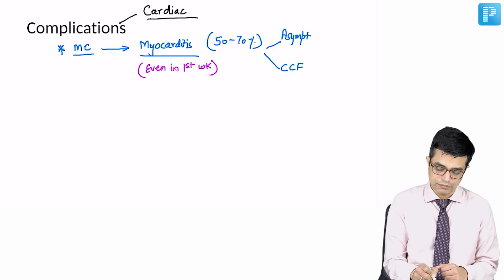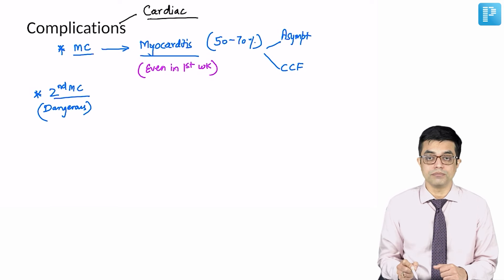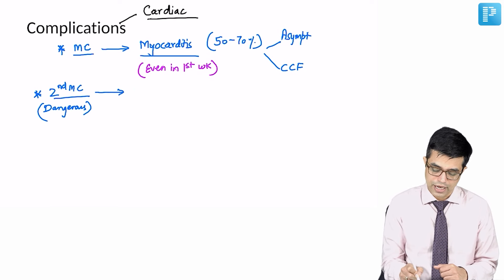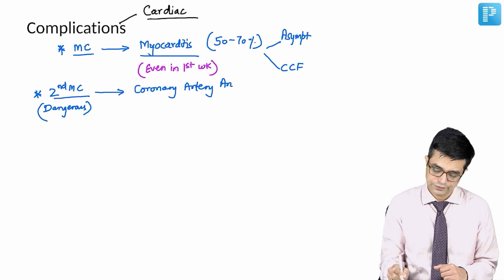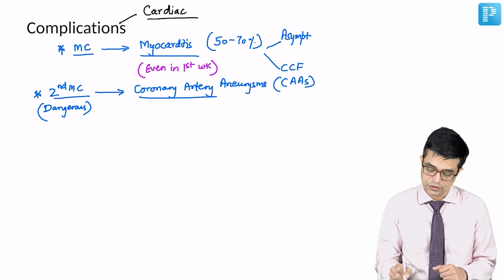The second most common complication, also called the most dangerous complication, critical complication, are aneurysms on coronary artery. We call them as coronary artery aneurysms. Aneurysms refer to dilatation of the vessels, so coronary artery aneurysms are the second most common complication.